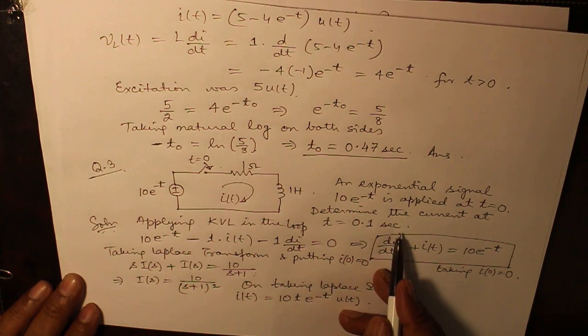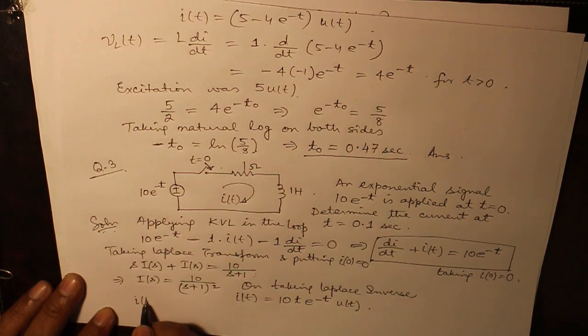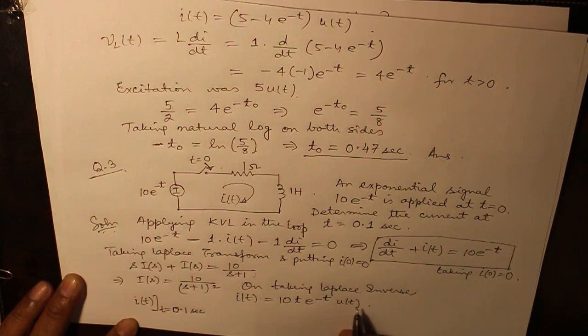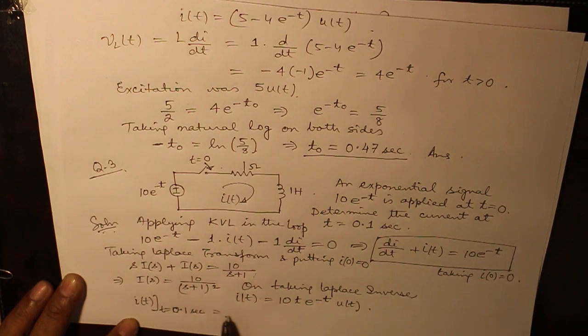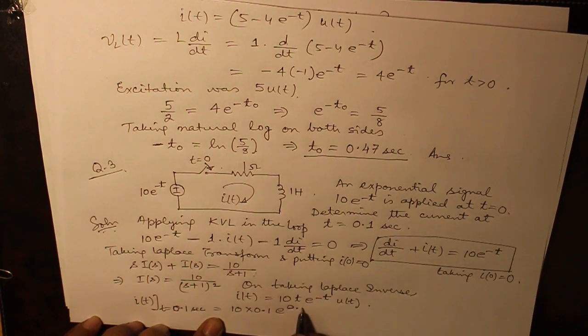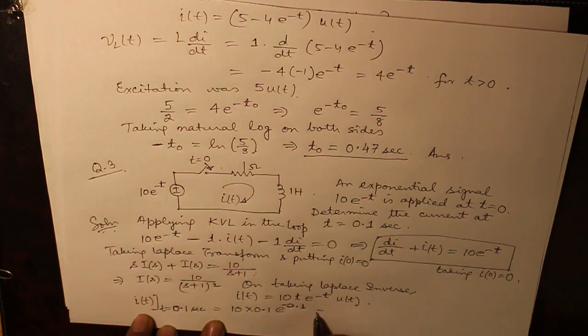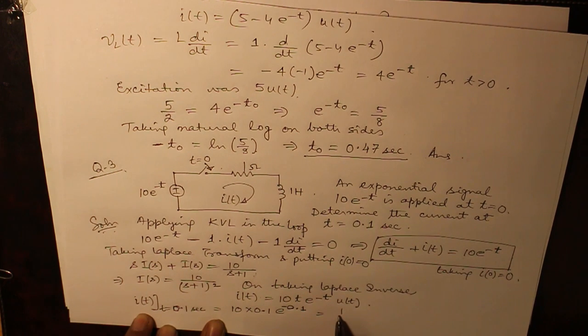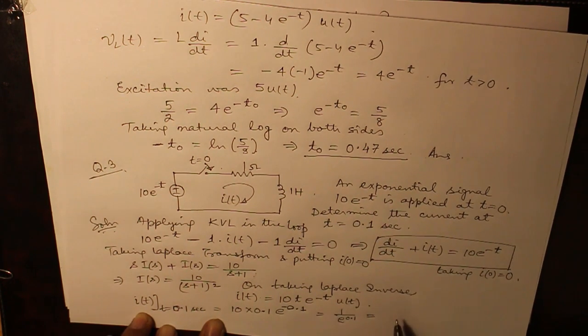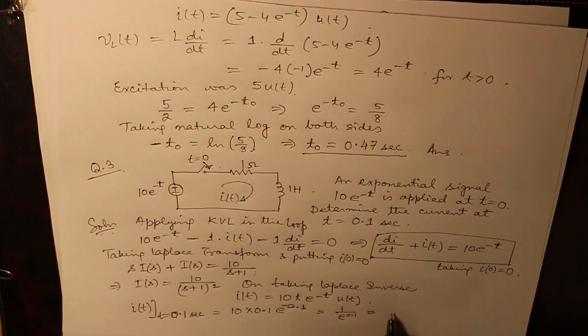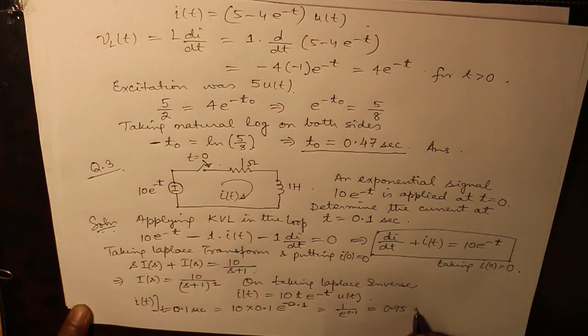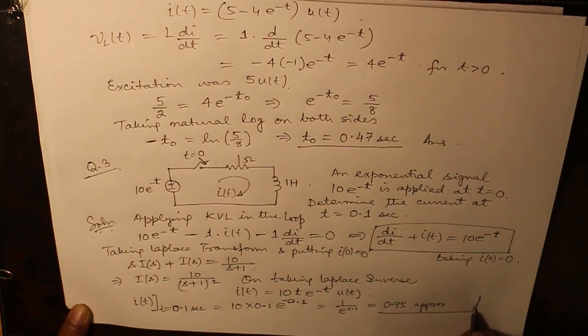We have to find out the current at time t equals 0.1 second. Just replace the value of t by 0.1. 10 into 0.1 becomes 1. So the answer is 1 over e raised to the power 0.1, which gives you the value of 0.95 approximately. Thank you.